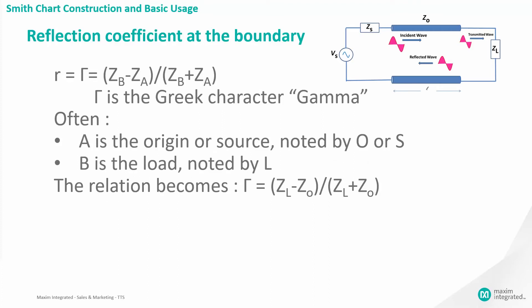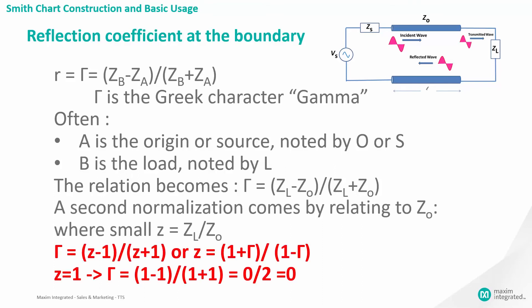We can place small r in this equation with the reflection coefficient gamma. We can replace ZA with ZO and ZB with ZL to match our original circuit. Finally, we can standardize the equation again by relating to ZO, where little z equals ZL divided by ZO. You can see that when there is no reflection or gamma is zero, the load impedance is equal to the source impedance, and little z equals 1.